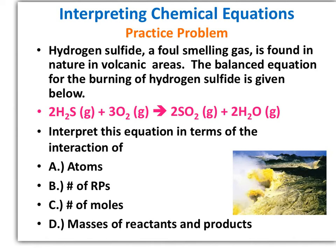Let's look at a practice problem. Hydrogen sulfide is a foul-smelling gas found in nature and volcanic areas. The balanced equation for burning hydrogen sulfide is: 2H2S + 3O2 → 2SO2 + 2H2O. We want to interpret this equation in terms of atoms, the number of representative particles (molecules, since we have covalently bonded substances), the number of moles (given by the coefficients along with representative particles), and the masses of reactants and products.